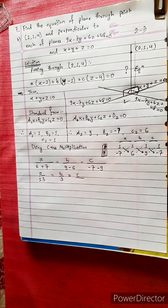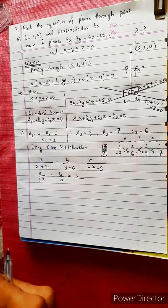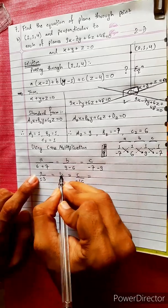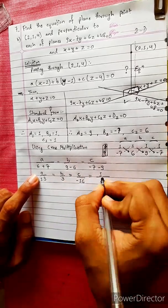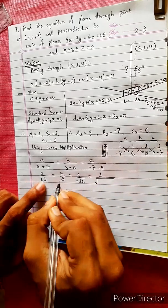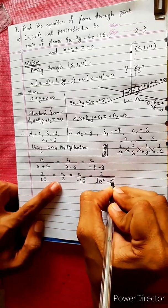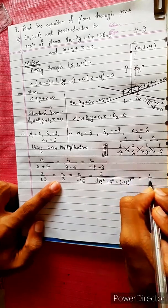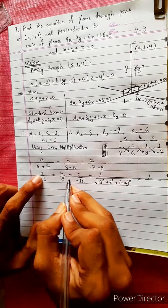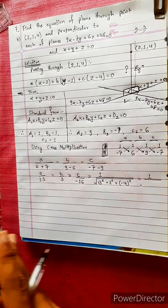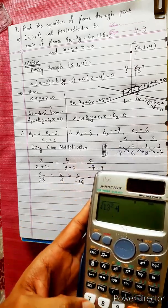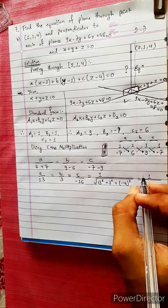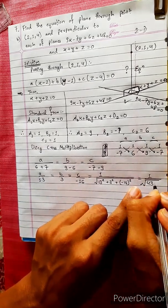...16 minus 16 equals the ratios. So a by 13 equals c by minus 16 square root of 13 squared plus 16 squared under root, giving root 434.